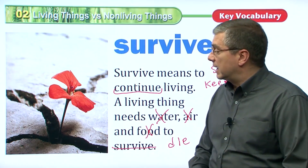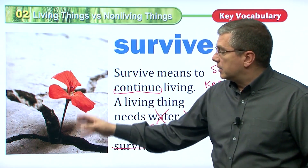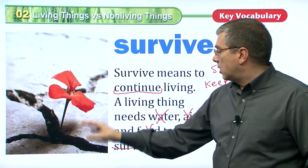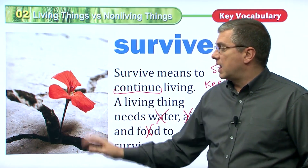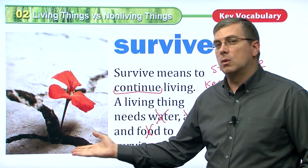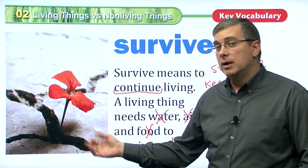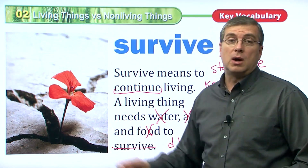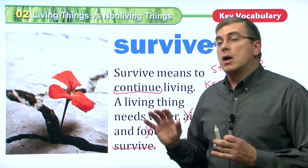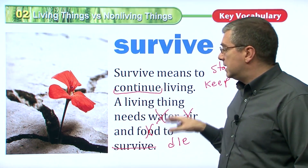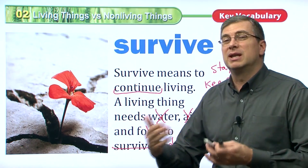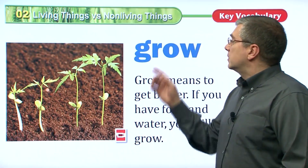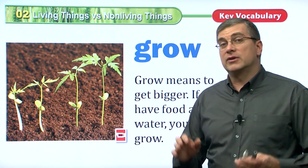If living things don't have those things, they die, and eventually they go extinct. Look at this flower — it is growing and it needs water, air, and food in order to survive. If you take away water, the flower will die. No air, the flower will die. No food, the flower will die. All living things need these things to survive.